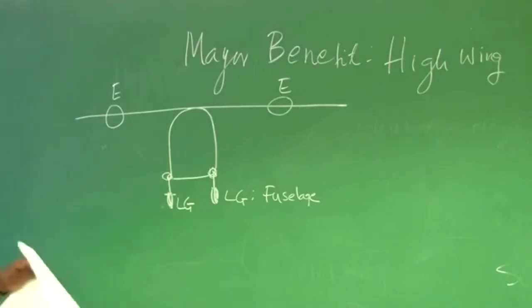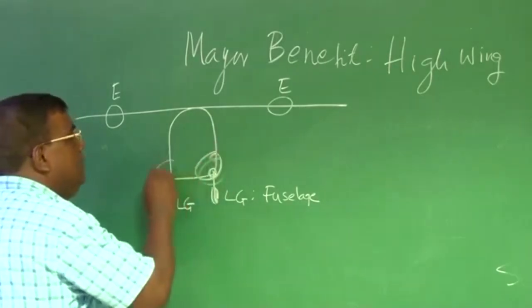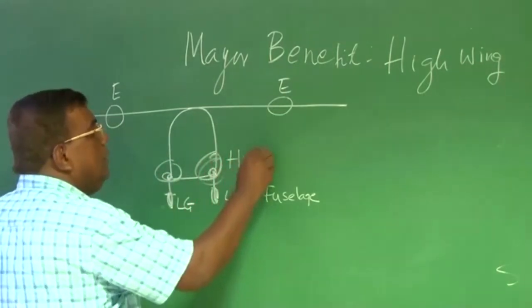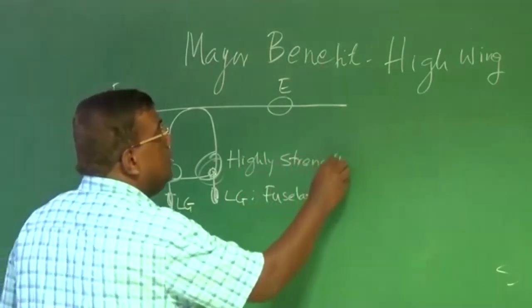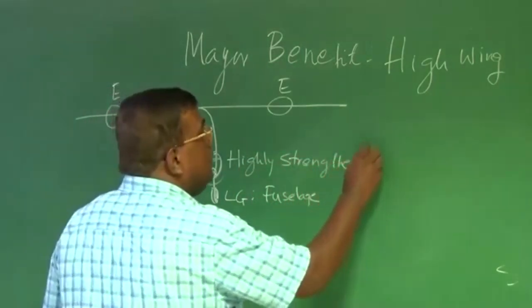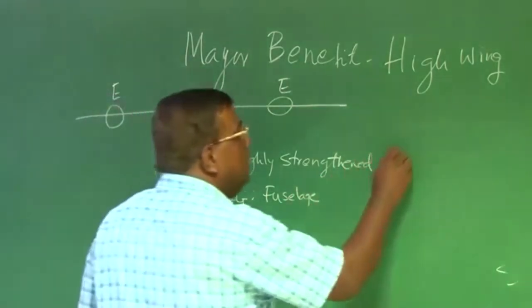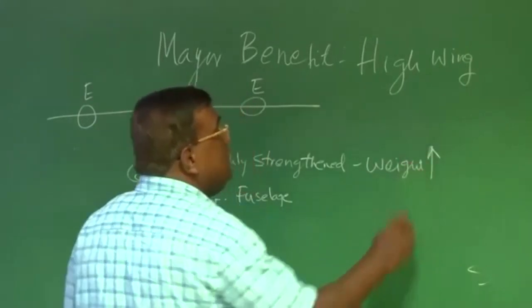So where are the landing gears housed? For such configuration, high wing configuration, it has to be invariably on the fuselage. So landing gear is housed in the fuselage. And landing gear takes all the impact load. So this part of the fuselage, this part has to be highly strengthened. The moment we talk about highly strengthened, natural conclusion would be the weight may increase additionally.